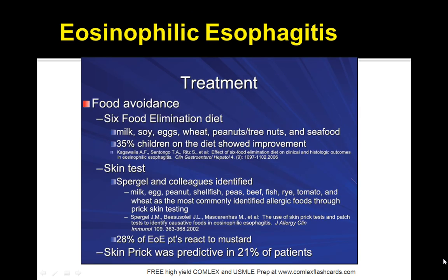What about treatment? Food avoidance — a six-food elimination from the diet — is key: milk, soy, eggs, wheat, peanuts, and seafood. 35% of children on this diet did show improvement.